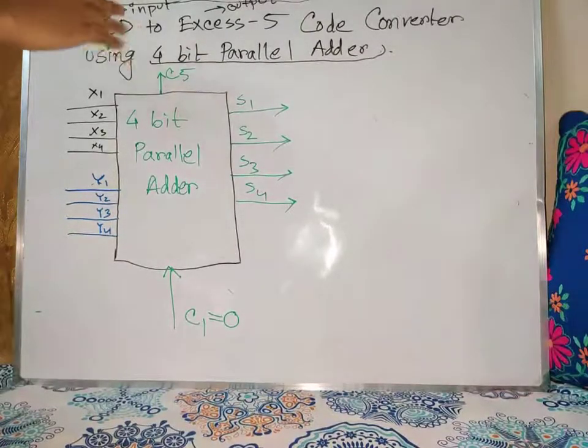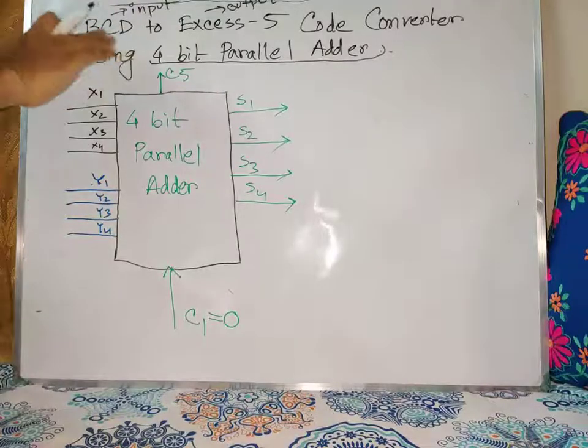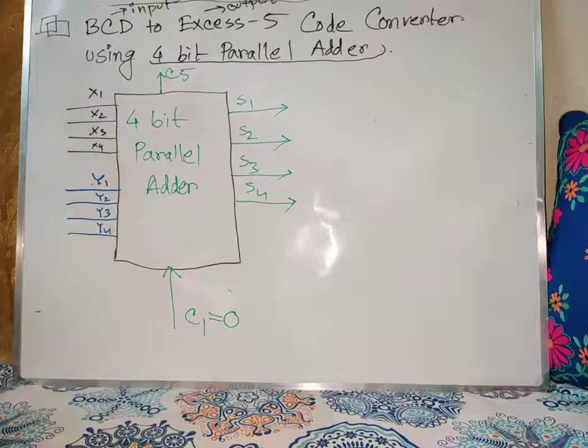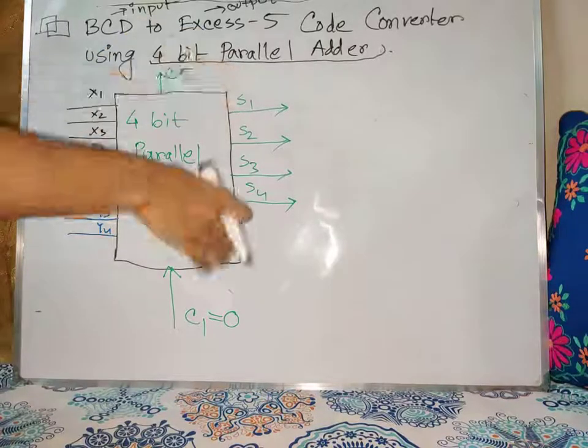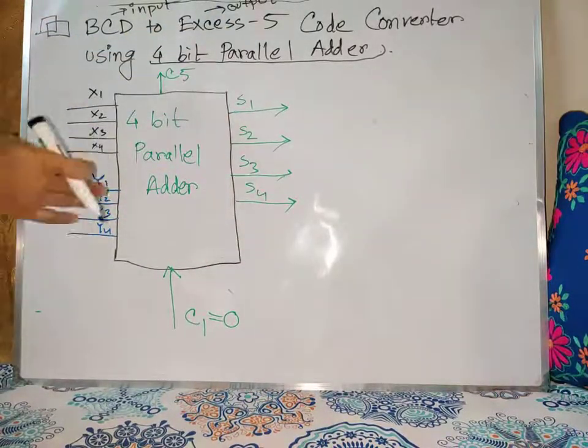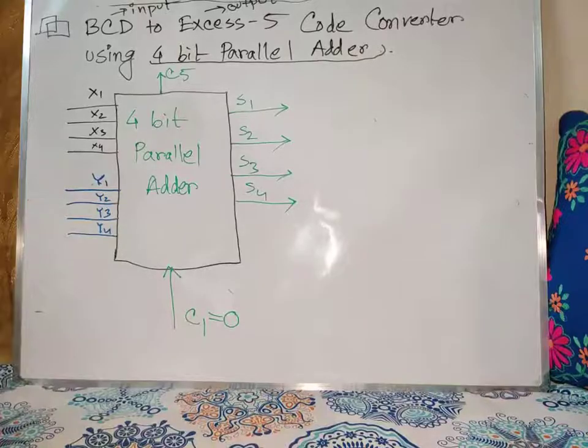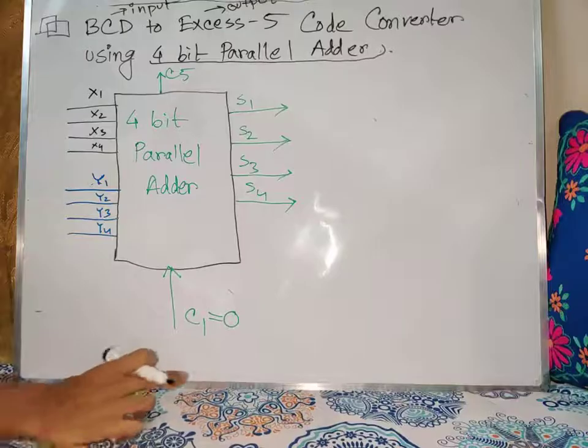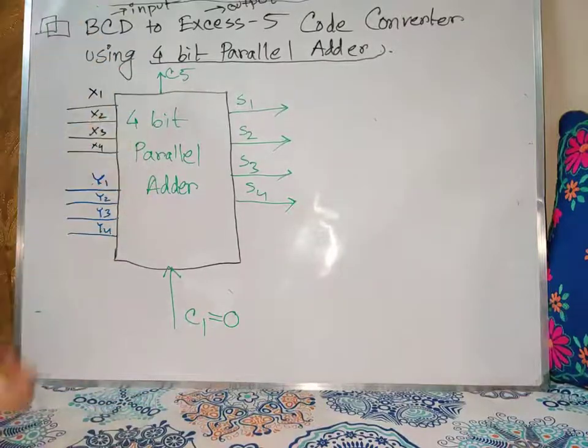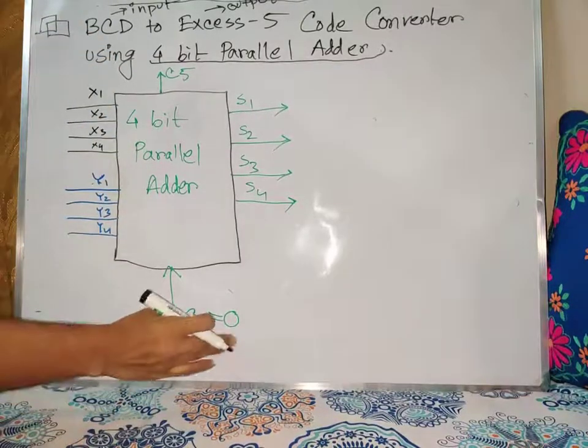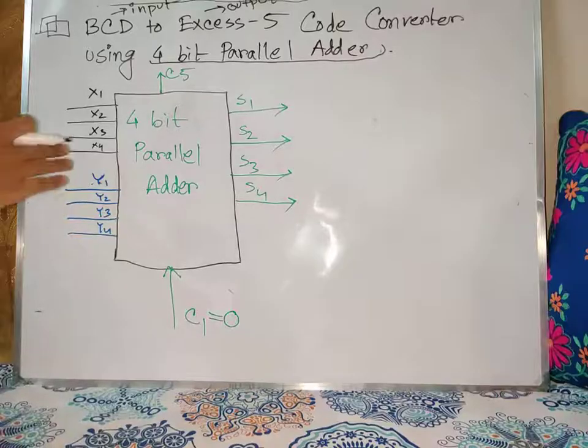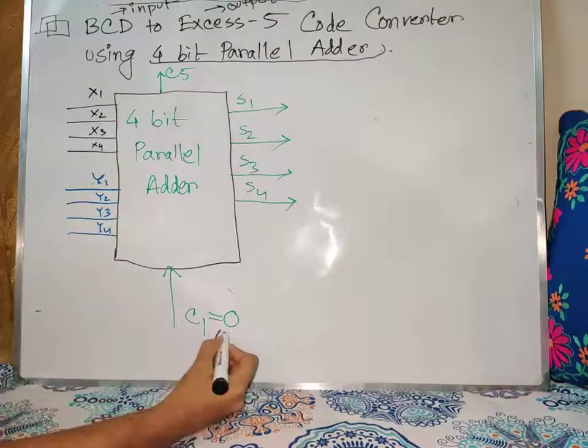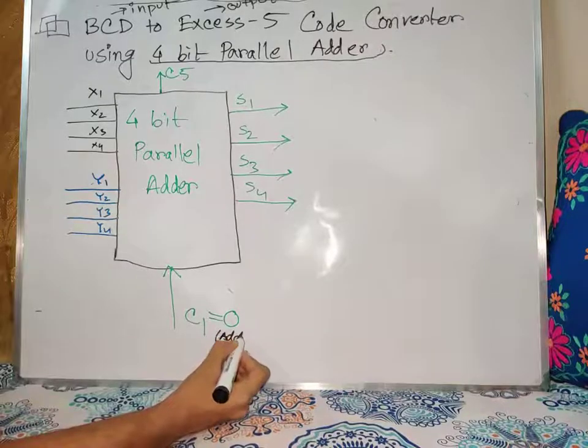Our BCD input would give XS5 output. XS5 has been added to BCD. The input is the new input and the main output is C1, it is 0. This is the addition type of element form.